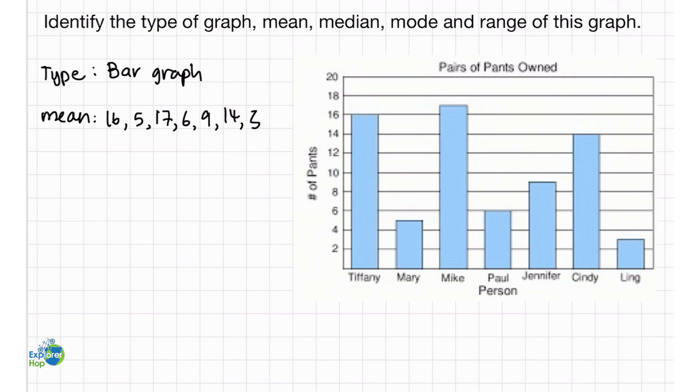Now, to find the average, we have to find the sum of all the numbers and divide it by the amount of numbers that are here. So, 16 plus 5 plus 17 plus 6 plus 9 plus 14 plus 3 will give us 70. And there are 1, 2, 3, 4, 5, 6, 7 numbers. So, we divide this by 7, which will give us 10. Our mean is 10.